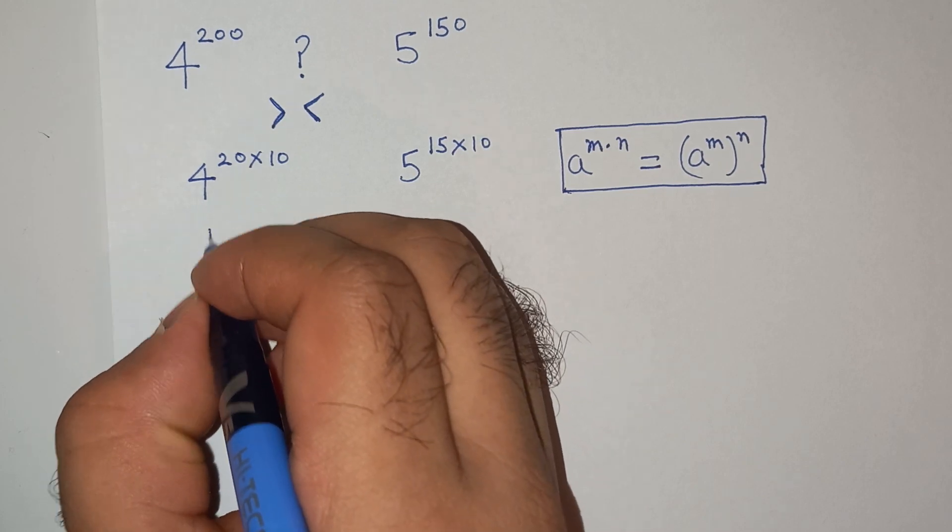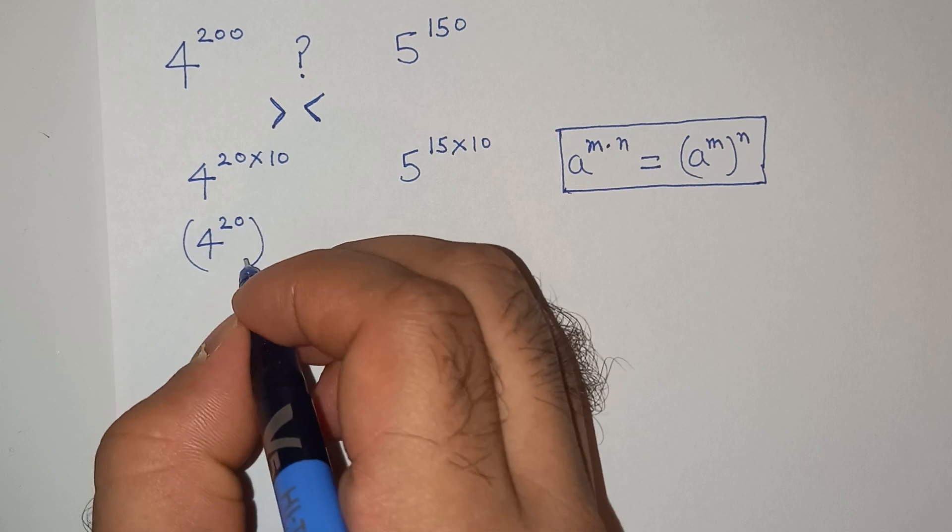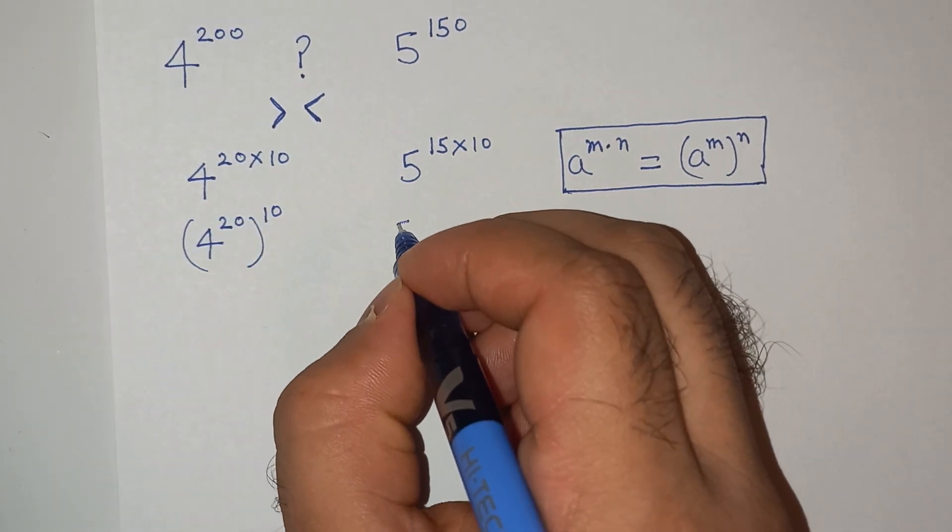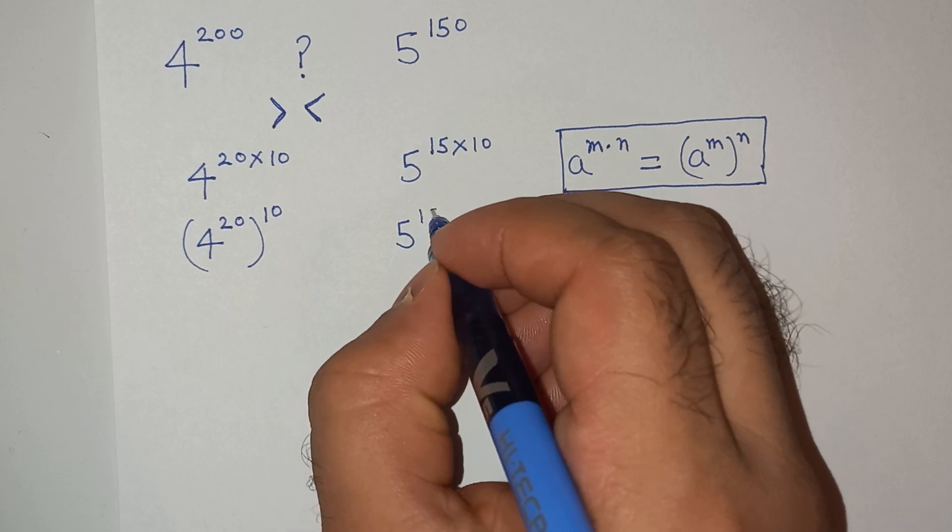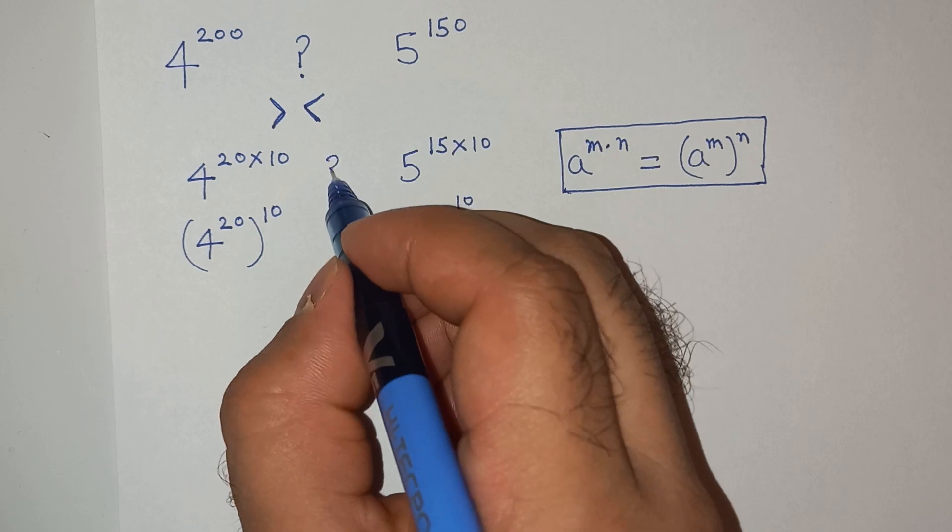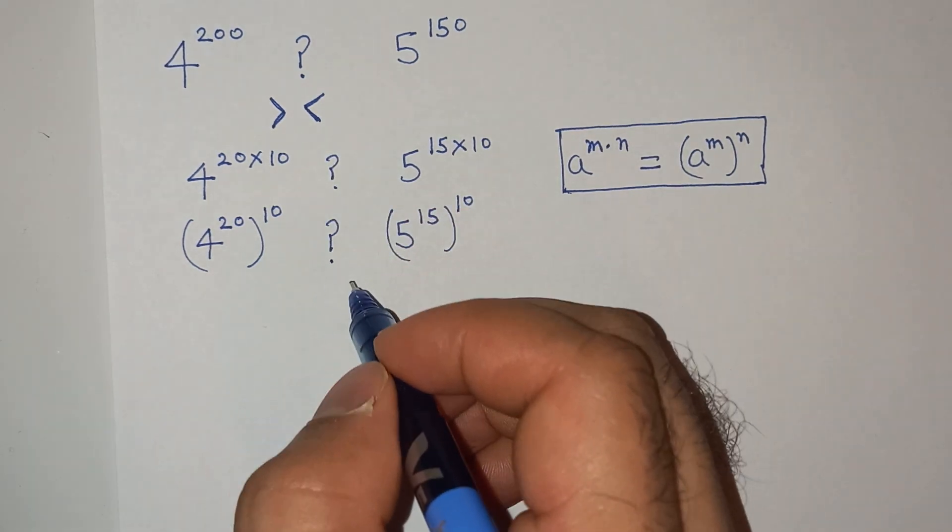So we can write this as 4 power 20 power 10, and this will be 5 power 15 power 10, and we have to find whether is it greater or lesser.